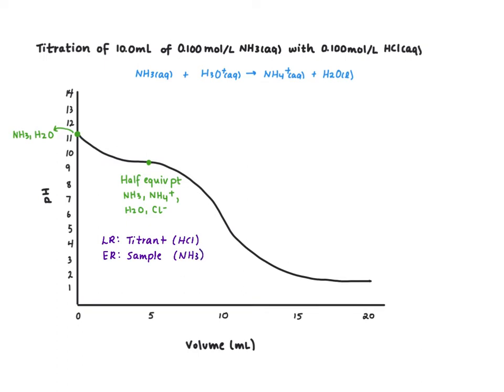This region around our half-equivalence point is called a buffer zone. In our buffer zone we have approximately equal concentrations of our initial base and the conjugate acid.